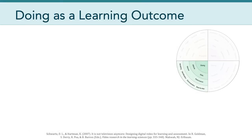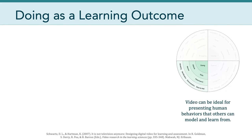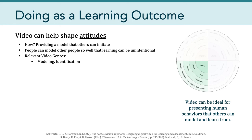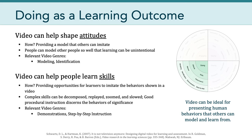The third area of the map focuses on doing as a learning outcome. The idea is that video can be ideal for presenting human behaviors that others can model and learn from. Video can help shape attitudes by providing a model — one thing to be careful of is that people can model others so well that learning of attitudes can actually be unintentional. Relevant genres include actual modeling, role-playing, and identification. Relatedly, video can help people learn skills by providing opportunities to imitate behavior shown in a video. Complex skills can be decomposed, replayed, zoomed in on, and slowed down.